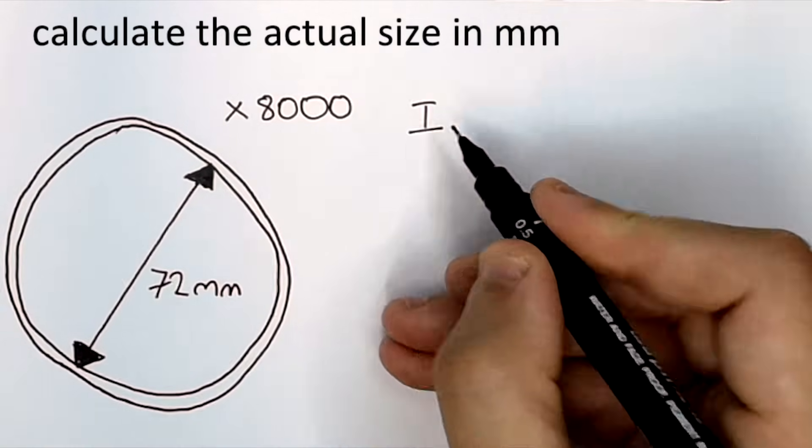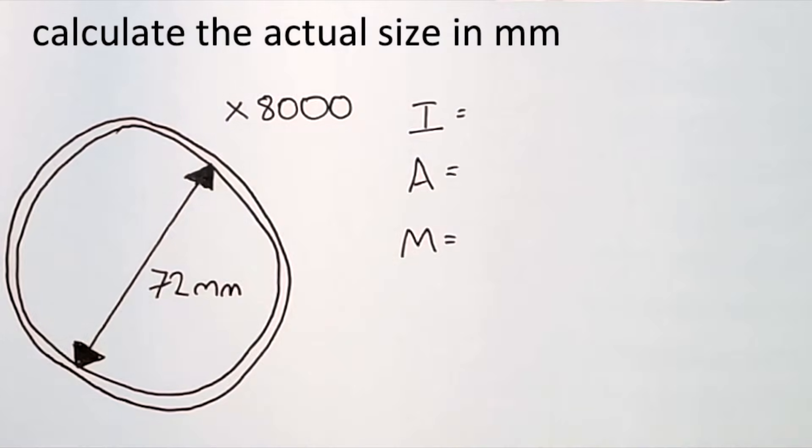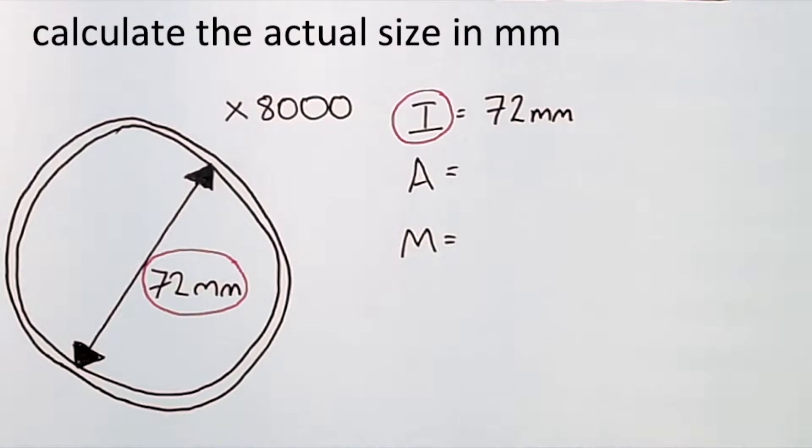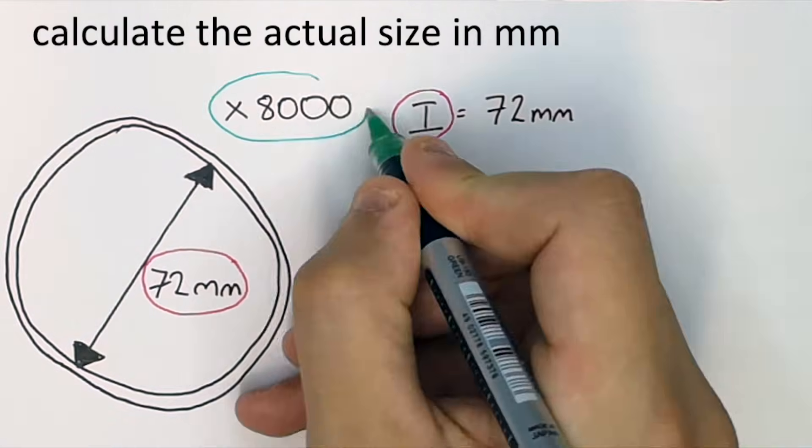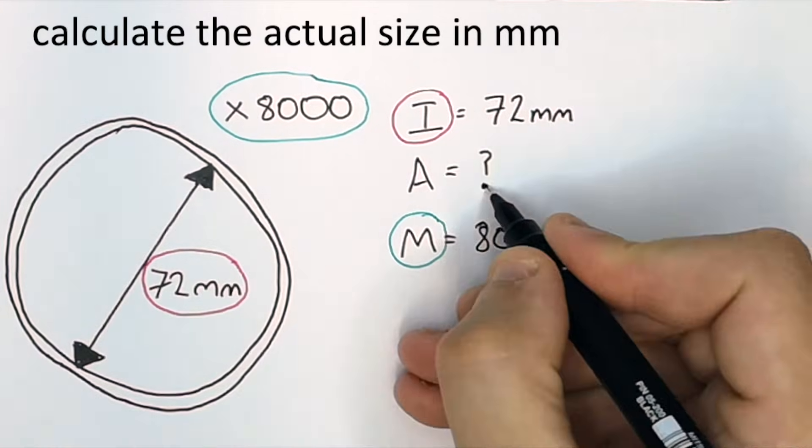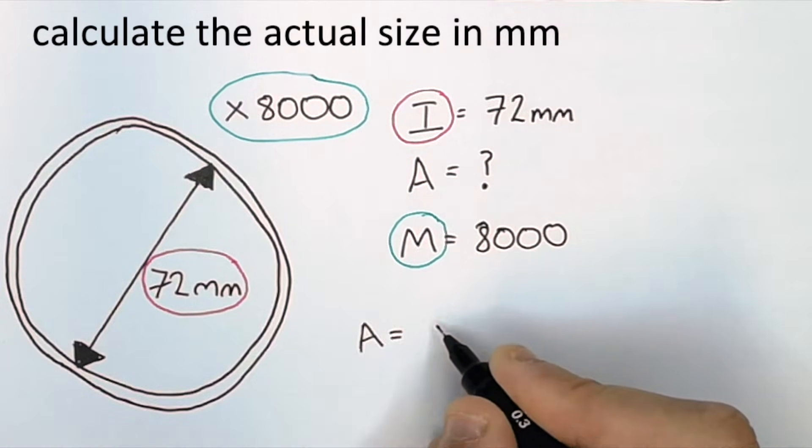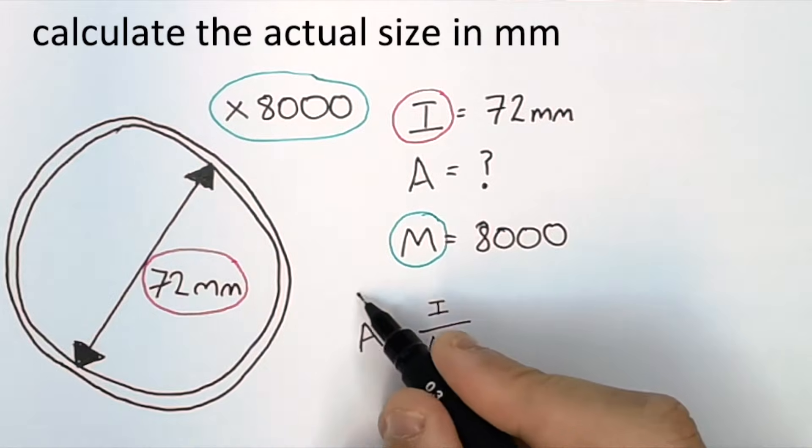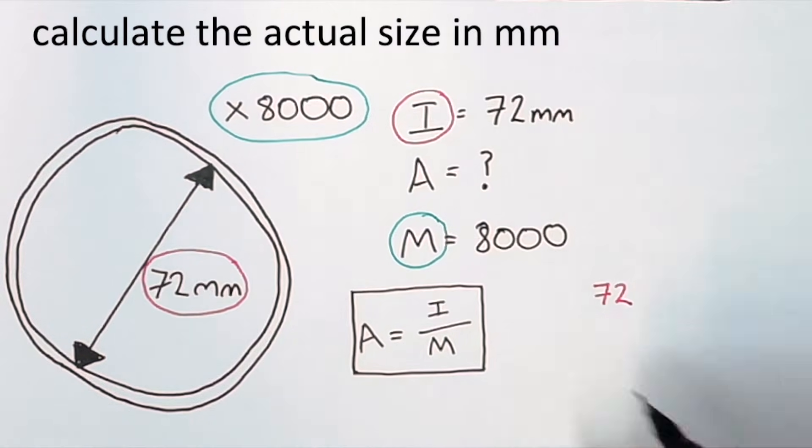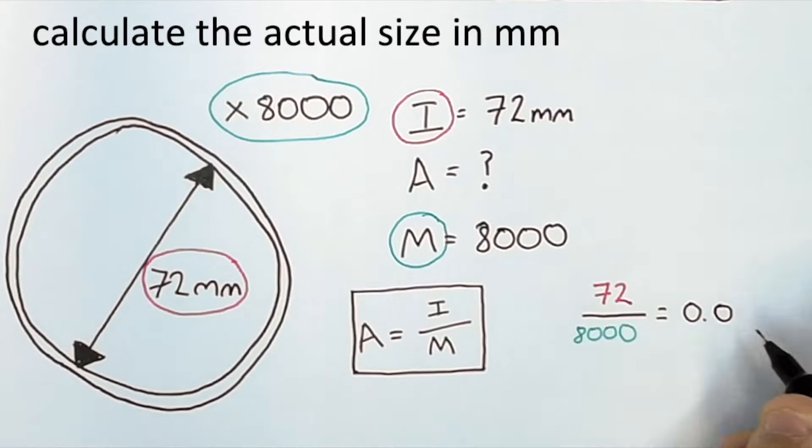The first thing you do is write I, A, M going down. Then you fill in what you've got. You've got the I, which is 72 millimeters. You've got the M magnification, which is 8,000. So what is A? A equals I divided by M. 72 divided by 8,000, which will give you A. In this case, A equals 0.009 millimeters.